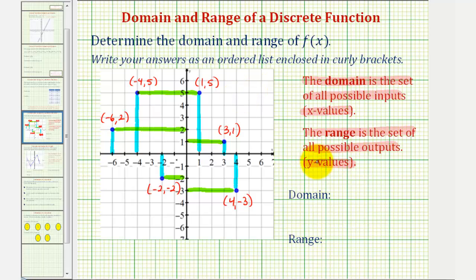Now let's go ahead and make our list. The domain, again, is a set of all possible x-values. We do want to order these from least to greatest, so let's work our way from left to right. The domain will be {-6, -4, -2, 1, 3, 4}.